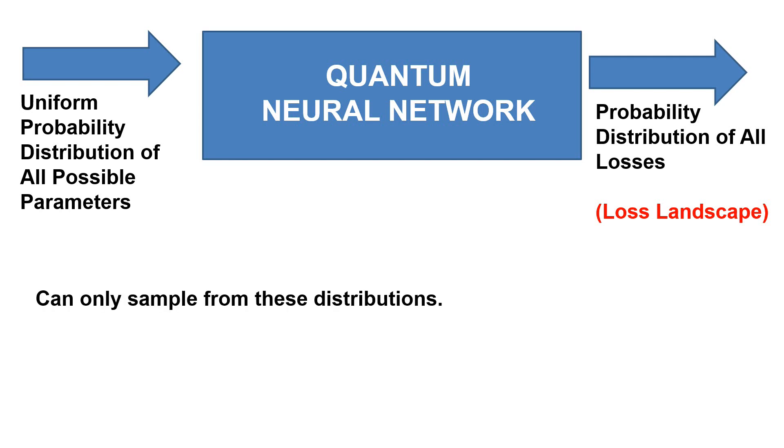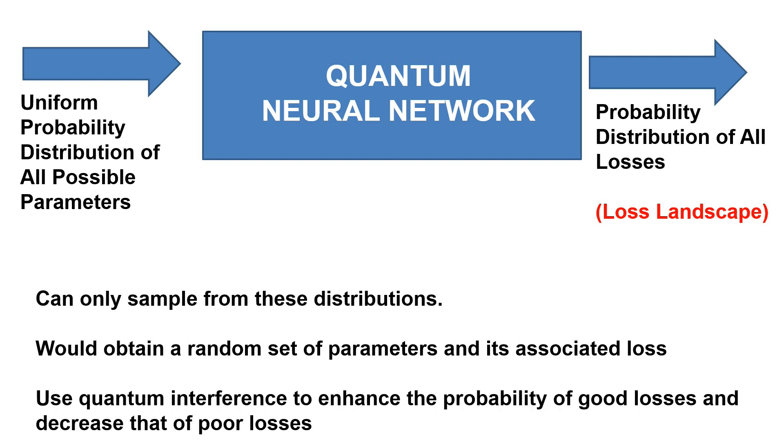We can only sample from these distributions, and so doing so would obtain only a random set of parameters and its associated loss. We need to use quantum interference to enhance the probability of good losses and decrease that of poor losses.